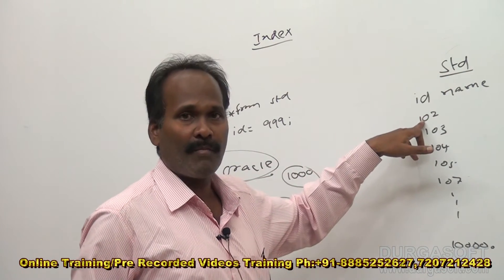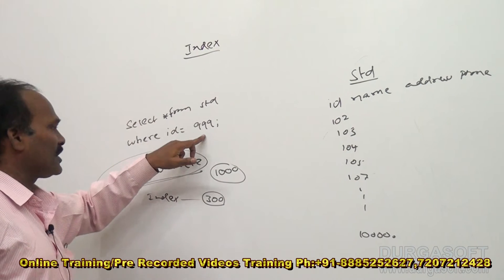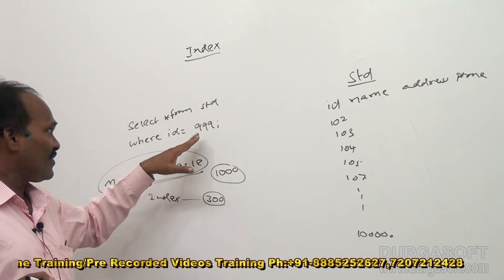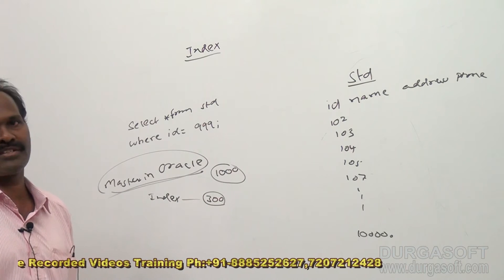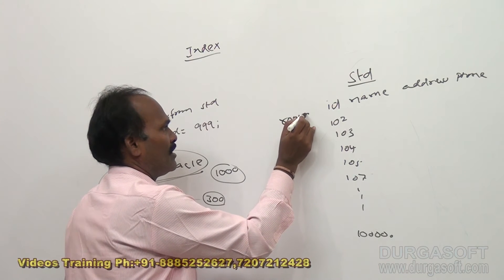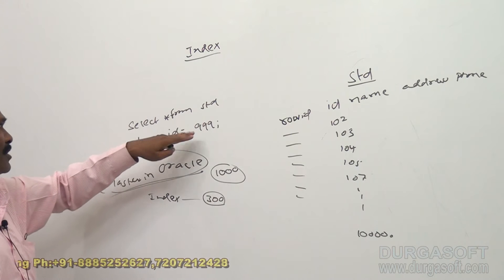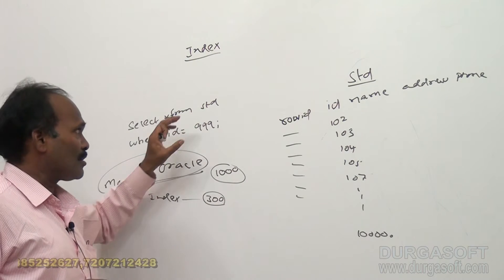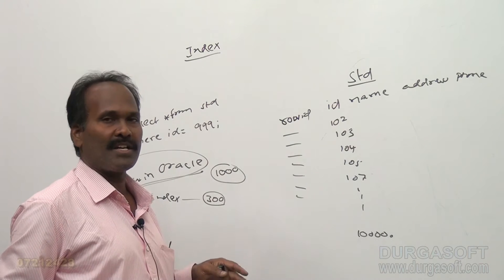In the same way, we can create an index for the id column. When we create an index for id and execute SELECT * FROM htd WHERE id = 399, internally Oracle looks at the index for 399. The index contains all id values and their corresponding row IDs. For each and every row in Oracle, a row ID is assigned internally by Oracle. So Oracle locates the row ID for 399 in the index, goes directly to that row ID, fetches the information, and displays it.